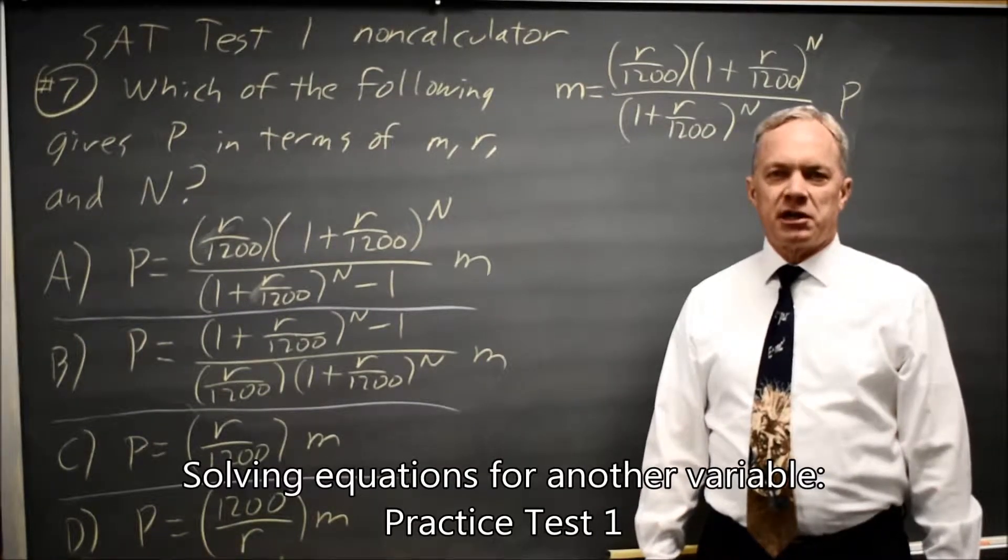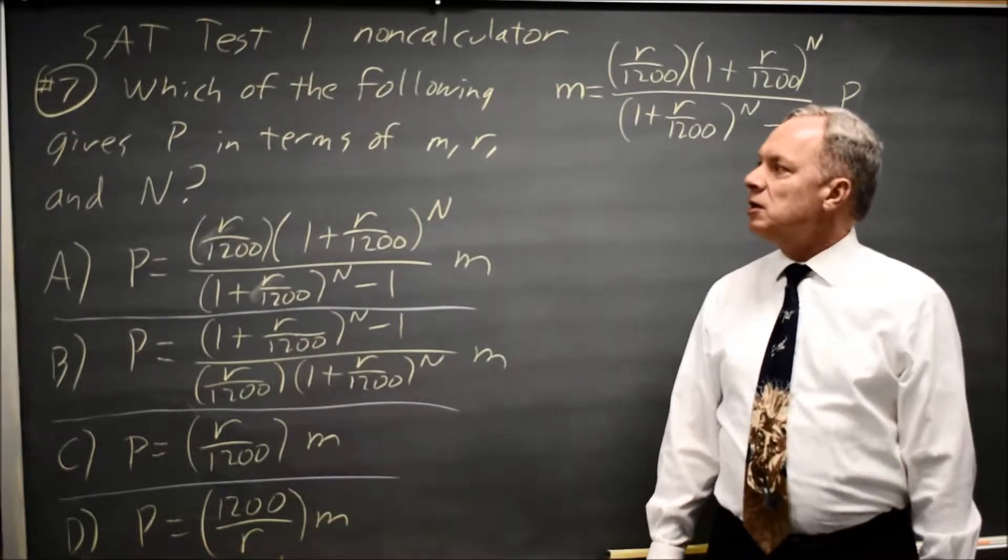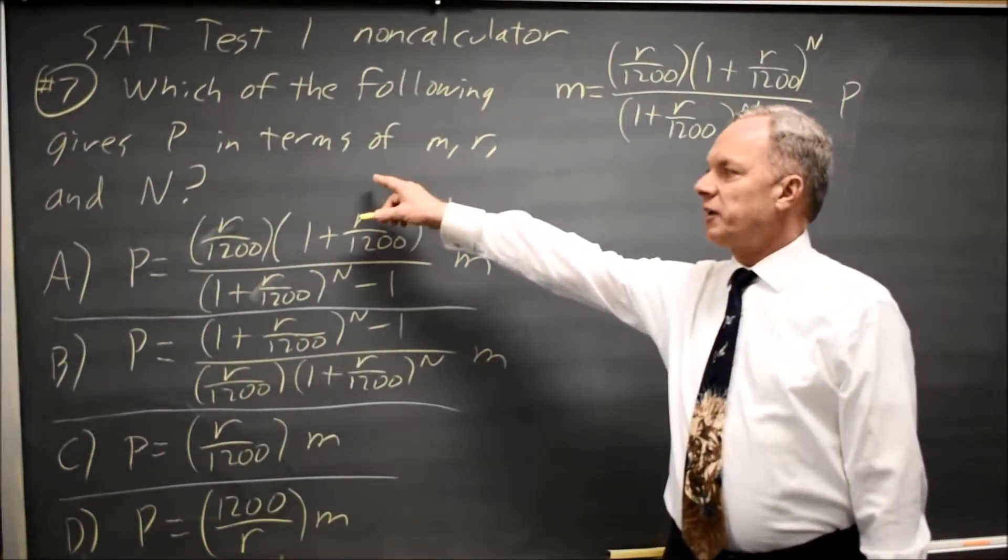This is SAT test one, non-calculator question number seven. Which of the following gives P in terms of M, R, and N?